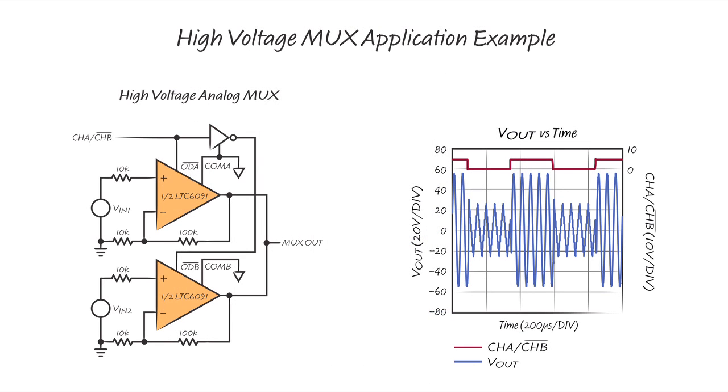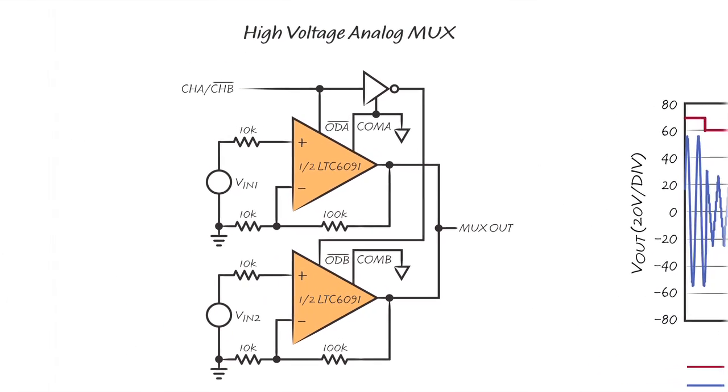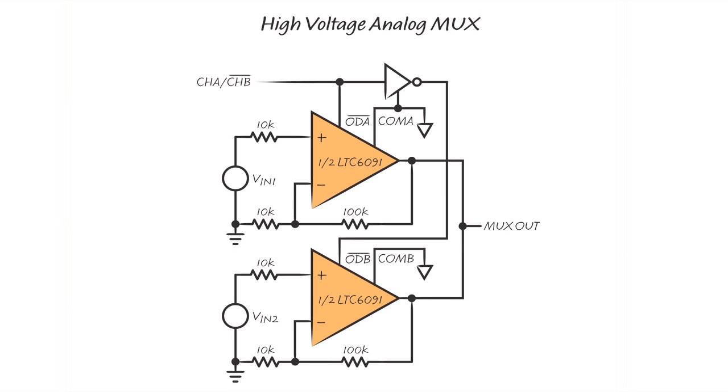Another interesting application makes use of the dual LTC6091 as a two-to-one high voltage analog multiplexer. The muxing function is performed using the LTC6091's output disable feature. Each channel of the LTC6091 comes with a logic controlled output disable pin, which when asserted will place the respective amplifier's output into a high impedance state. This allows the user to wire the outputs of the two channels together so long as one or the other amplifier's output disable pin is asserted out of phase.